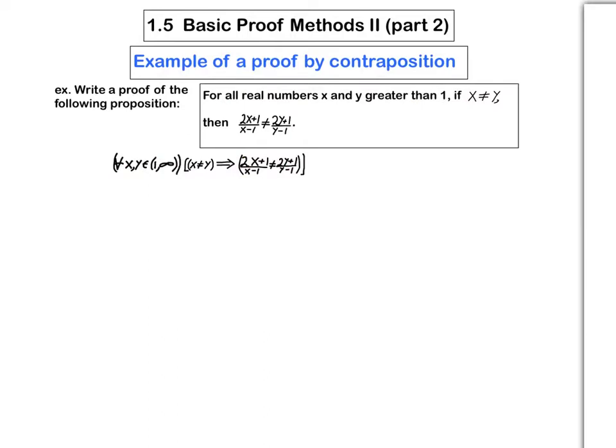Now, if you were to do a direct proof of this, you would start by saying, let x and y be greater than 1, real numbers greater than 1. Suppose x is not equal to y. And then you would have to try to deduce this.